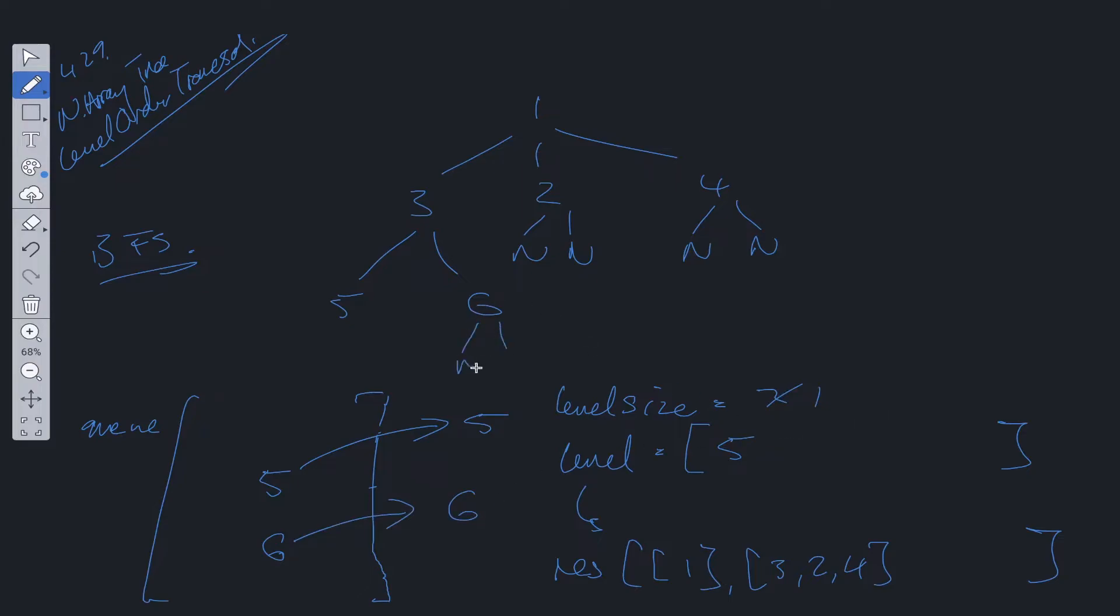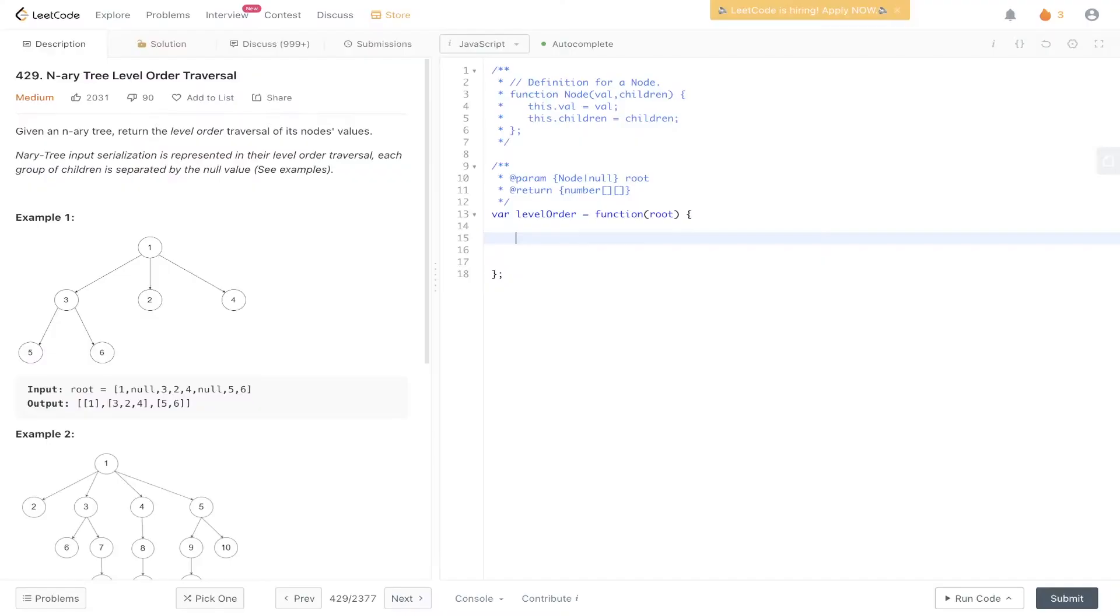We look, it doesn't have any children either. So we add that into level. Level size is decremented to zero. And now, because level size is zero, we can push that into res. Queue is now empty, so we exit that and we just return this as the output. Time complexity of this algorithm is going to be O(n), and space complexity is also O(n).